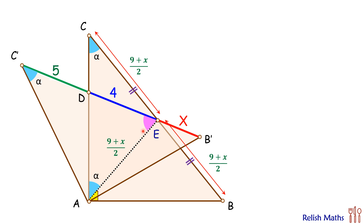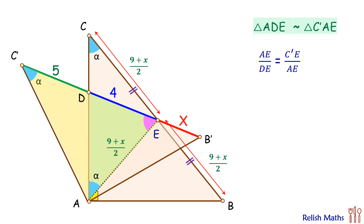Since we are looking for similar triangles, if we look at triangle ADE and triangle C'AE, both have the blue and pink angles in them. By angle-angle similarity we can say these two triangles are similar, and thus the ratio of corresponding sides will be equal. So AE upon DE equals C'E upon AE.